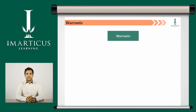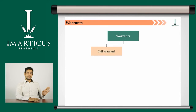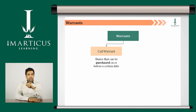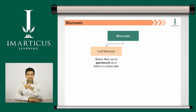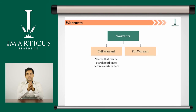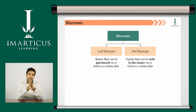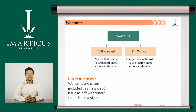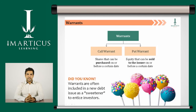There are two different types of warrants: a call warrant and a put warrant. A call warrant represents a specific number of shares that can be purchased from the issuer at a specific price on or before a certain date. A put warrant represents a certain amount of equity that can be sold back to the issuer at a specified price on or before a stated date. Finally, warrants are often included in a new debt issue as a sweetener to entice investors.